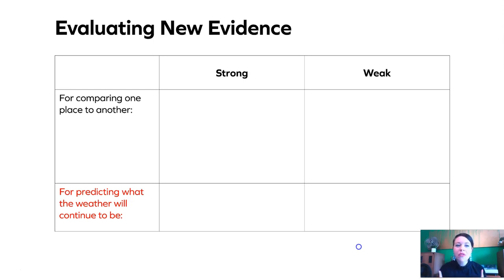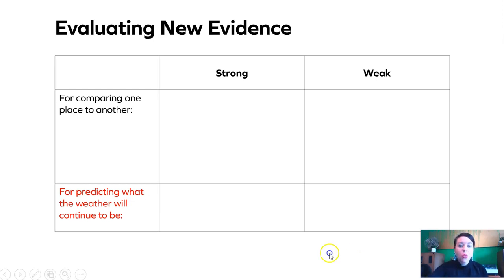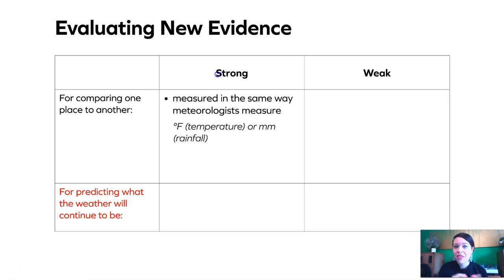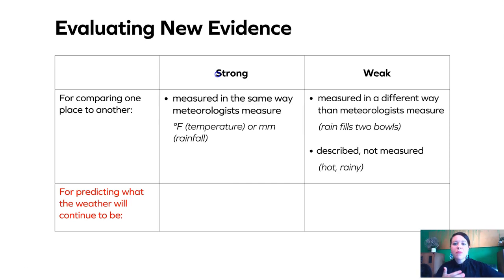Before we do, I want to remind you about evaluating evidence. To evaluate something means to judge how useful it is. In chapter one, we were comparing one place to another and decided that strong evidence must be measured the same way meteorologists measure — for example, temperature in degrees Fahrenheit and rainfall in millimeters. A weak piece of evidence would be something measured inconsistently.